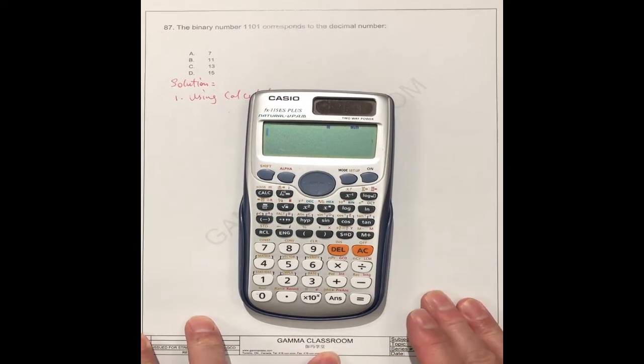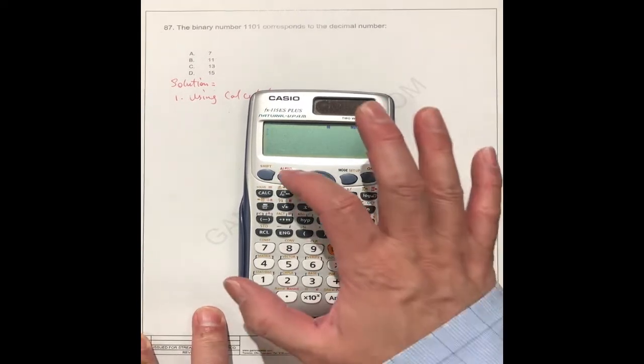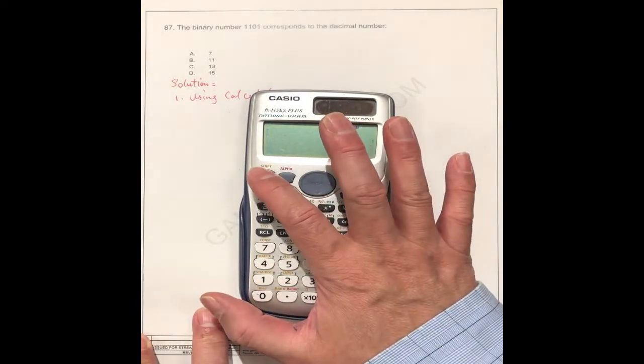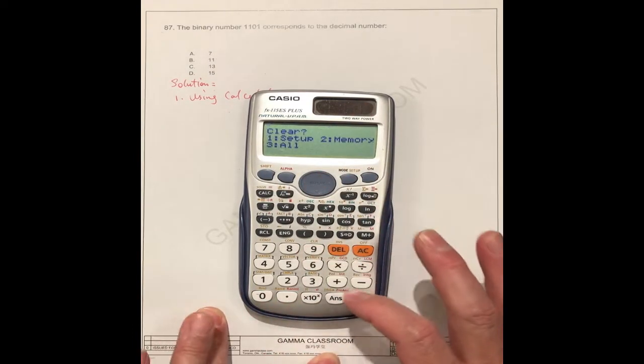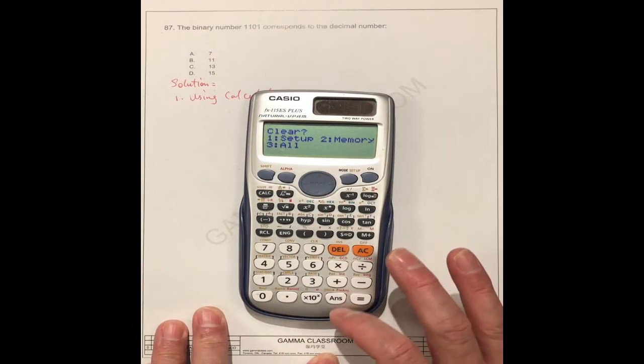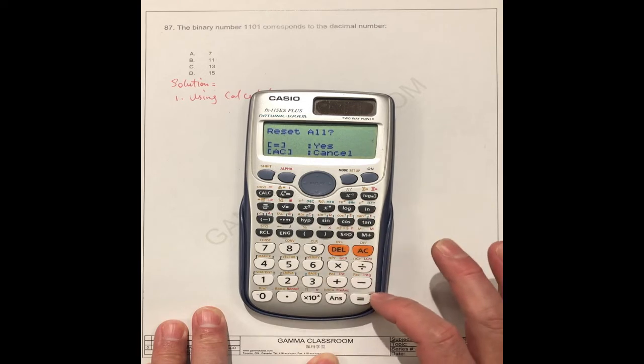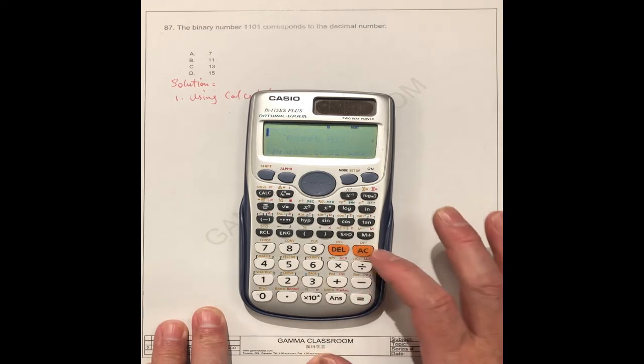If you do the binary to transfer, decimal, octal, or anything, you just choose. The first one should be clear all the internet. Clear number 3 for all equals yes. Yes.